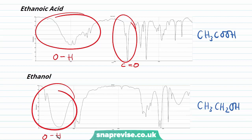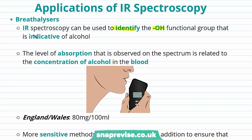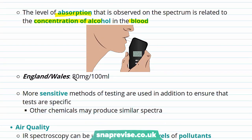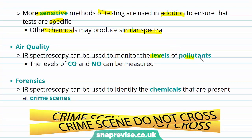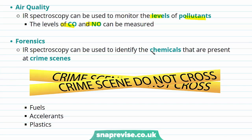Now let's take a look at the applications of IR spectroscopy. IR spectroscopy can be used to identify the hydroxyl functional group indicative of alcohols in breathalysers — the level of absorption observed is related to the concentration of alcohol in the blood. In England and Wales the upper limit is 80 milligrams of alcohol per 100 ml of blood. More sensitive methods are also used, as other chemicals can produce a similar spectrum. IR spectroscopy is also used to monitor air quality, including levels of pollutants such as carbon monoxide and nitrogen monoxide. It is also hugely useful in forensics to identify chemicals at crime scenes, including fuels, accelerants, and plastics.